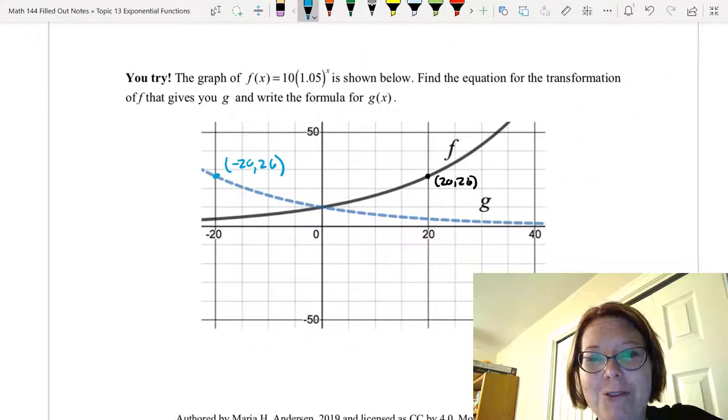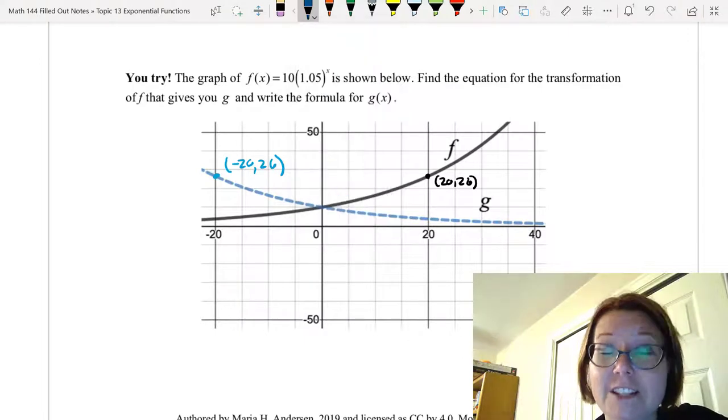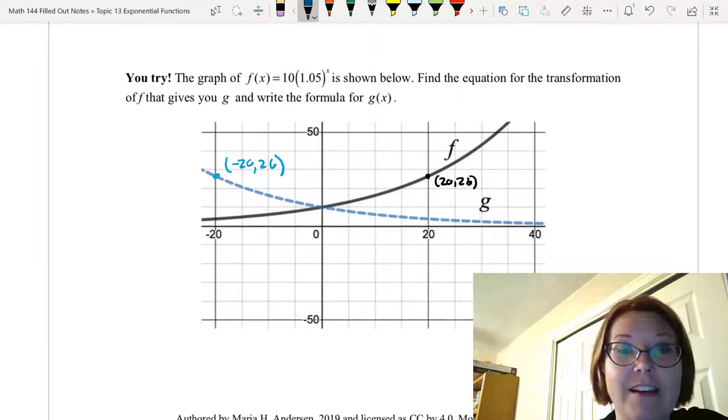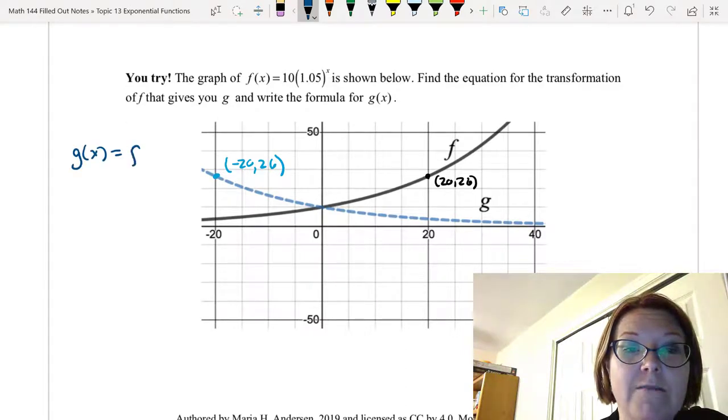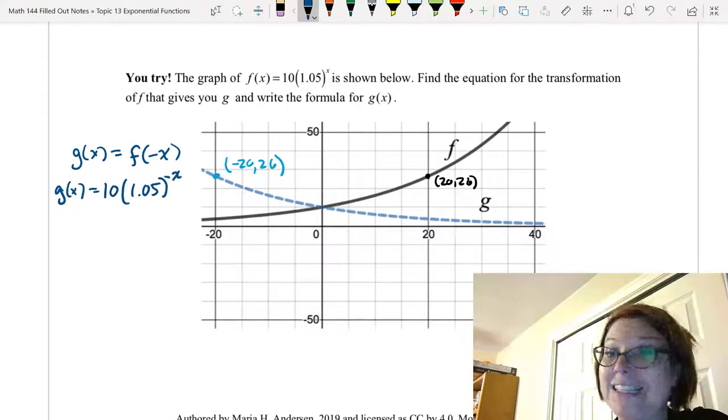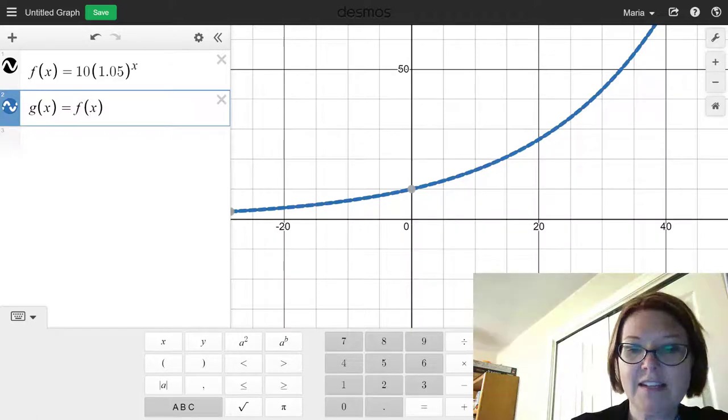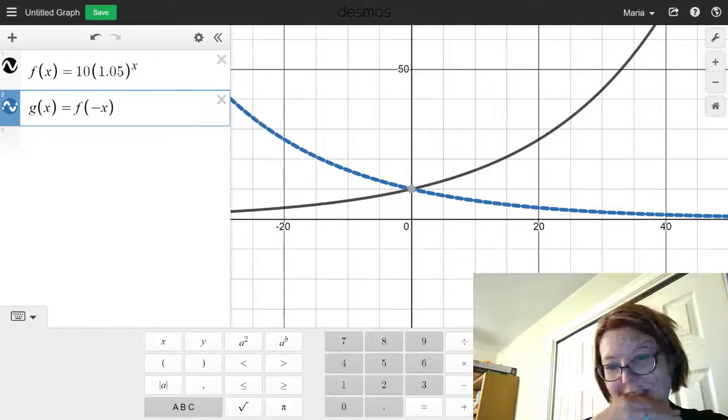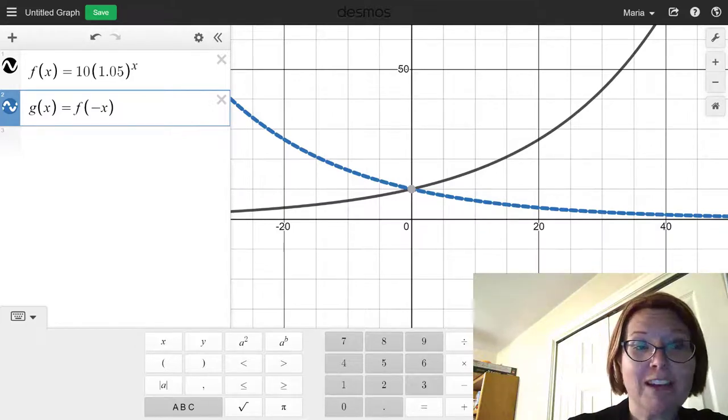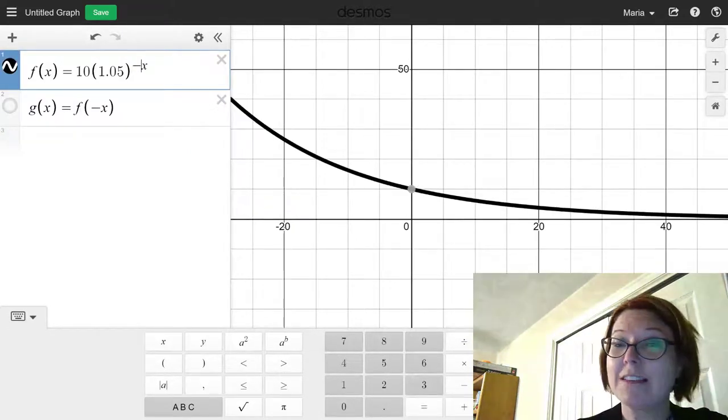Okay we're back. Hopefully you looked at this and thought to yourself, self that is a horizontal reflection because that's what it is. And a horizontal reflection we write by replacing the x value with a negative x and so we would write that as g of x equals f of negative x or g of x equals 10 times 1.05 to the negative x power. Let's just double check that over in Desmos. We've got our graph of f and we've got our graph of g all ready to go. I'm going to replace the x inside of f of x with negative x and there we get the horizontal reflection that we wanted to have. We could also double check this by going to the original function and instead of x in the original function we could write negative x and you'll see you get the exact same graph that way as well.